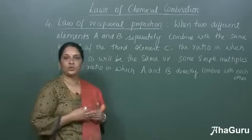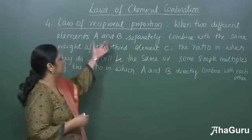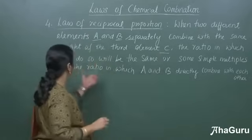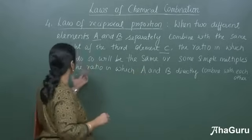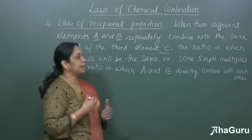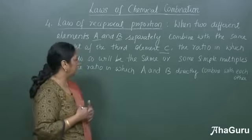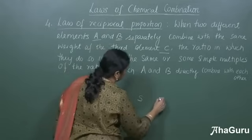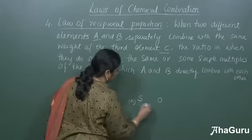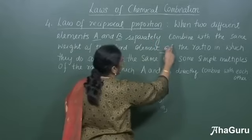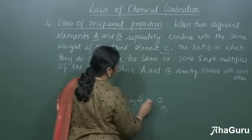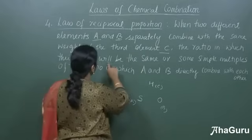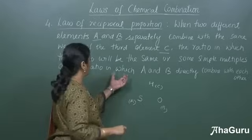The next law is the law of reciprocal proportion. This states that when two different elements A and B separately combine with the same weight of a third element C, the ratio in which they do so will be the same or some simple multiple of the ratio in which A and B directly combine with each other. Let me consider element A as sulfur and element B as oxygen, and the third element C as hydrogen.